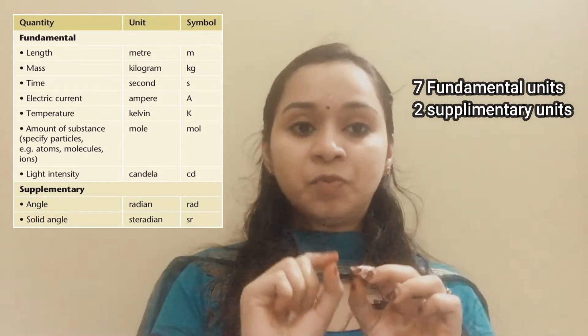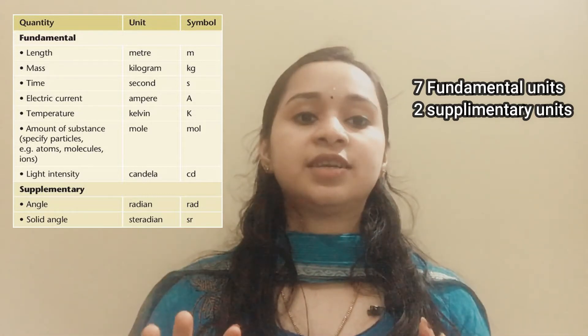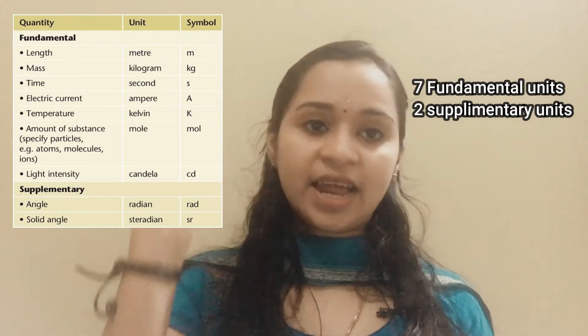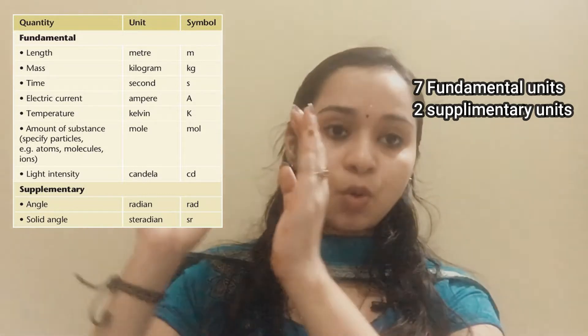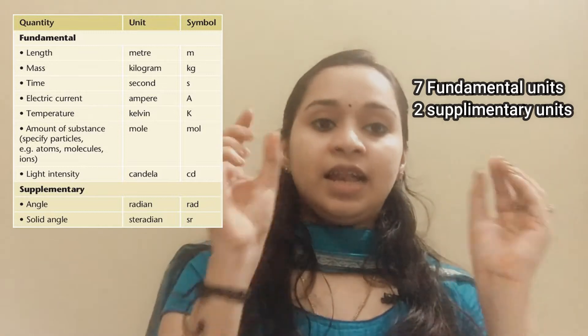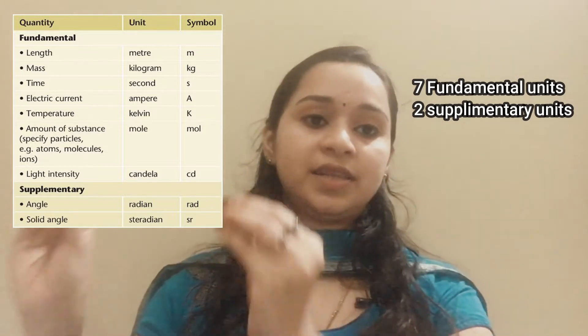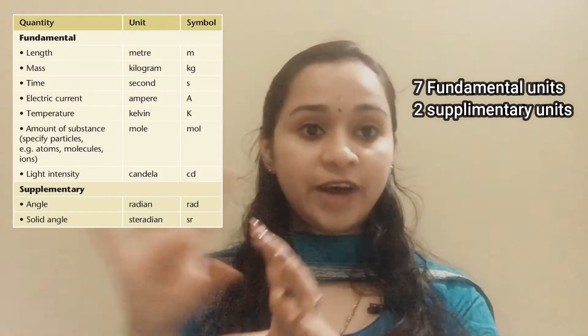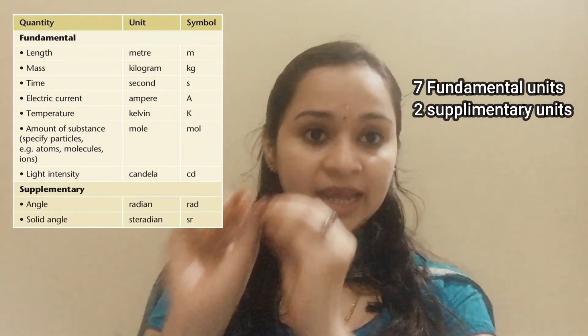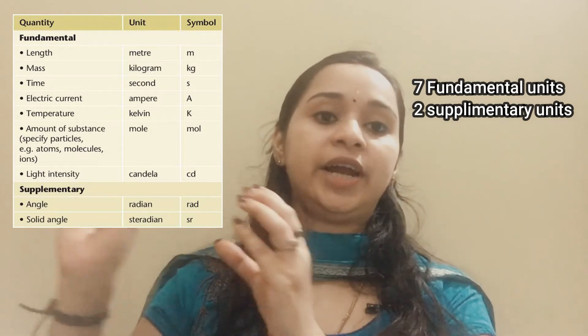There is a definition clearly mentioned for each unit. For example, length: the distance that light passes through a vacuum in the interval of 1 by 299,792,458 of a second.